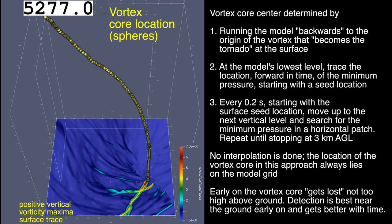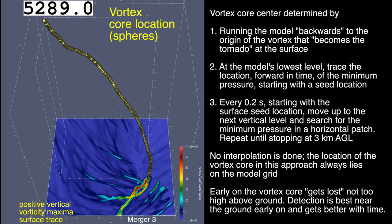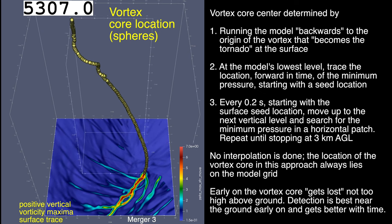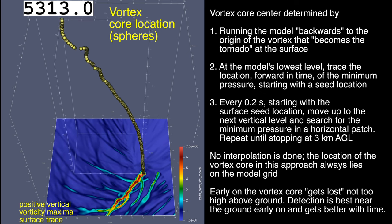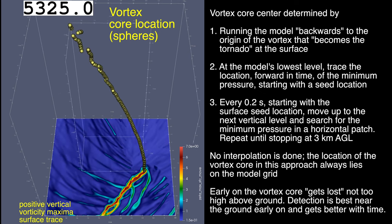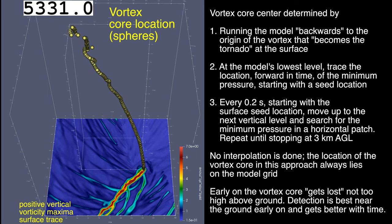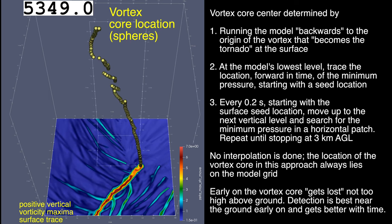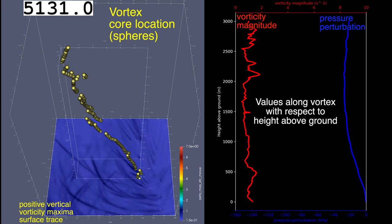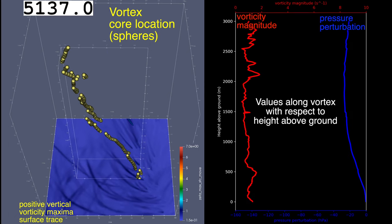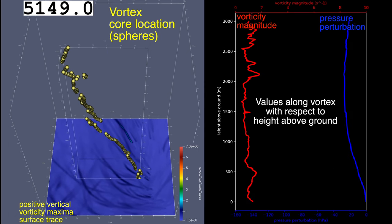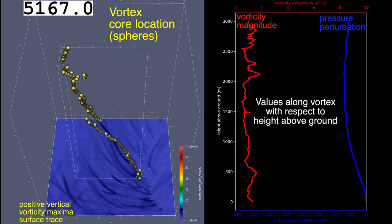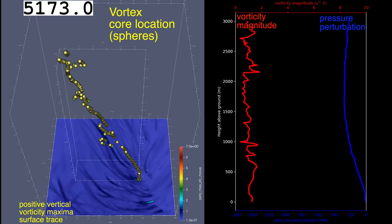On the right, I describe the process by which I do the vortex core detection — it's very simple. Notice I put a box around the vortex core that shows its volumetric extent. Notice how that box gets much more small and columnar towards the end as the vortex becomes more vertically erect. On the left, you've got vorticity magnitude; on the right, pressure perturbation — these are values along the vortex core analysis.